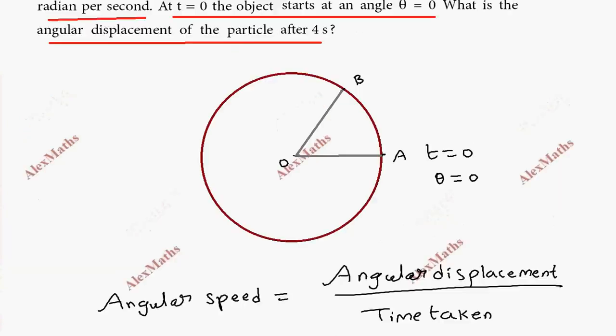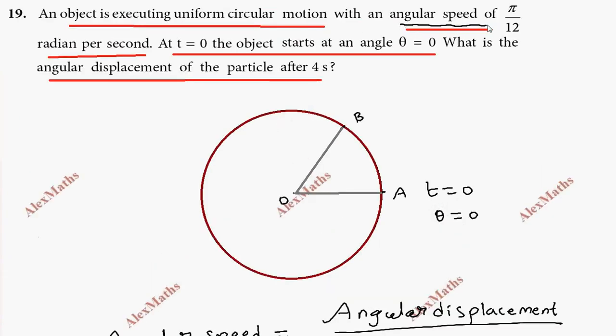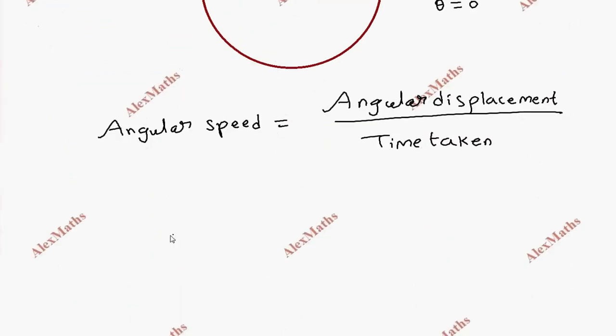Angular speed is π/12 radians per second. So π/12 equals angular displacement divided by time, which is 4 seconds.